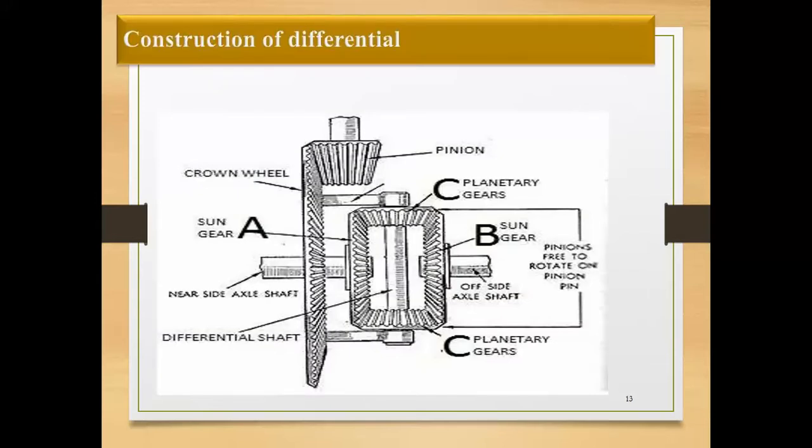Construction of the differential: the differential has different components that are crown wheel, pinion, planetary gears, sun gear, pinion, off-side angle shaft, planetary gears, differential shafts, near-side angle shafts, and sun gear. This is the construction of the differential.